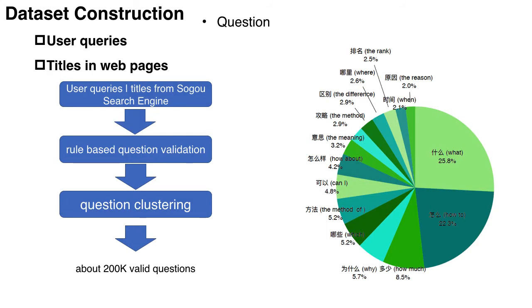Then, we gather some questions for CompQA. We use our in-house Sogo search engine to obtain some user queries and page titles as the original question resources. Then we adopt a rule-based filtering process to obtain the valid questions.